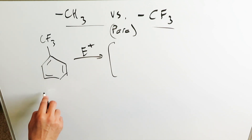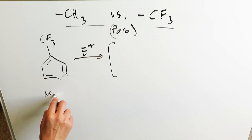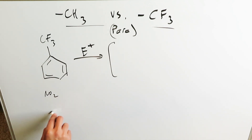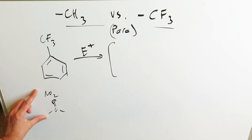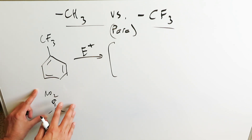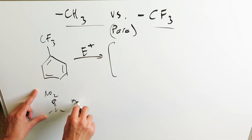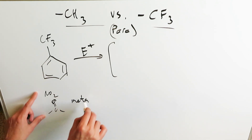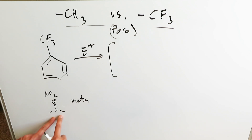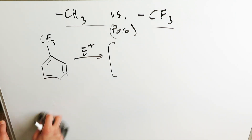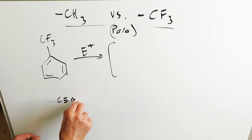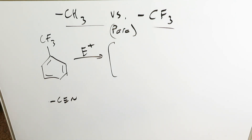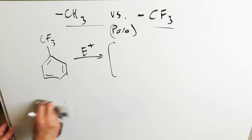A similar situation arises with the para attack on this type of substituent. Substituents similar to CF3 include your nitro group, carbonyl groups, aldehydes, ketones, esters — all highly electron withdrawing groups attached to your benzene ring — and these will be meta directors. The nitrile group is another meta director.